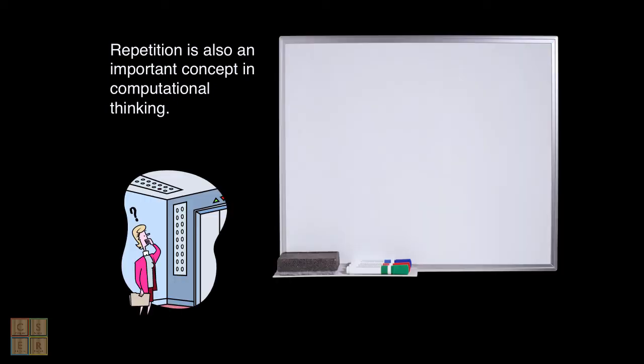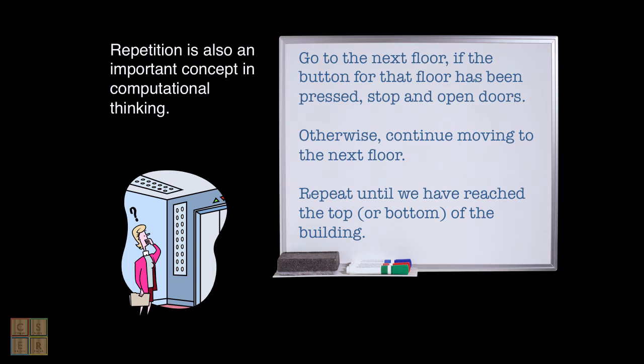Repetition is also an important concept in computational thinking and is commonly used in algorithms. We can recognize this in the behavior of software systems around us. For example, an algorithm that controls the behavior of a lift might look something like this: go to the next floor; if the button for that floor has been pressed, stop and open the doors; otherwise, continue moving to the next floor; repeat this until we have reached the top or bottom of the building. Repetition allows us to repeat a common task many times, perhaps with slightly different information or context. One common aspect of repetition is the inclusion of a condition that tells you or the computer how many times to repeat a sequence of instructions.